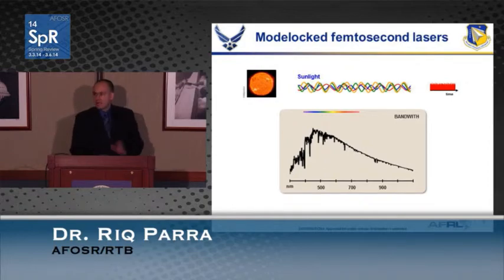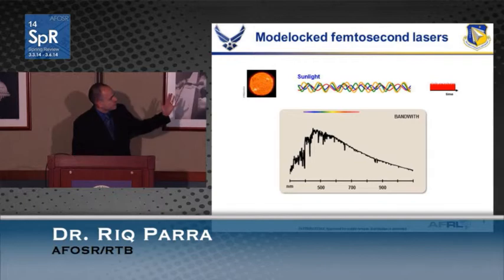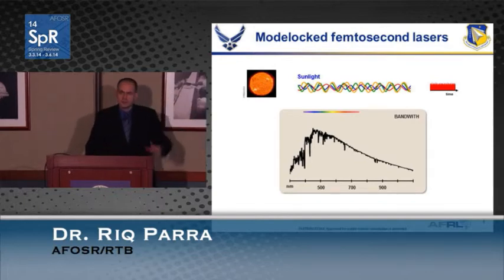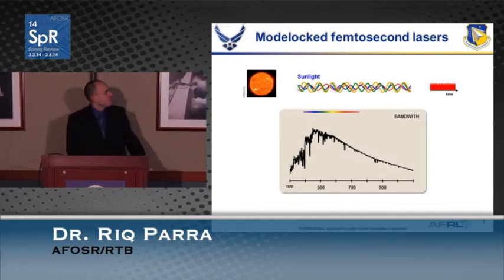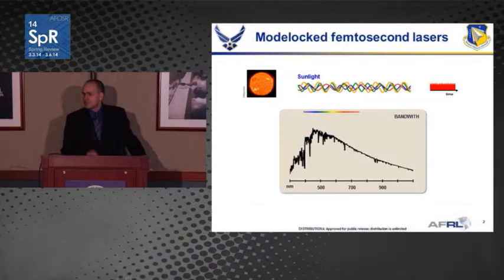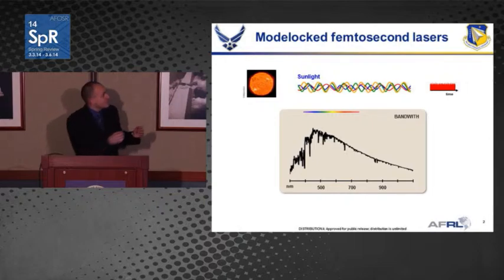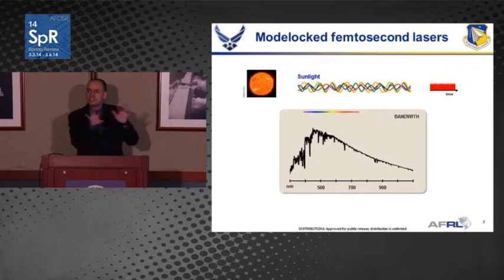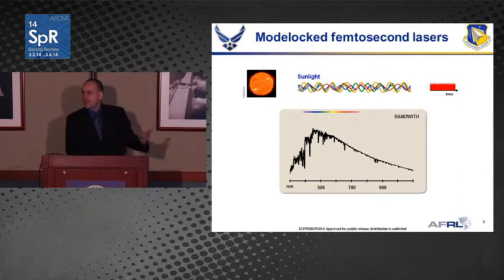If I take sunlight and pass it through a prism, we get its full colors — from the ultraviolet, the visible, the infrared, and beyond. If you look at the spectral components of this light, you see that there's no phase relationship between them. It's incoherent, meaning the crests of each color just don't line up. So on a detector you would see an average power, albeit a little noisy.